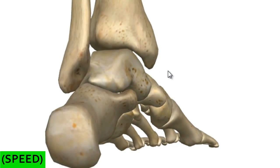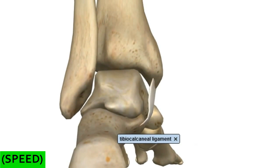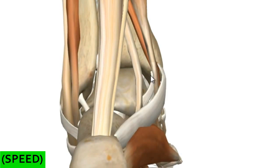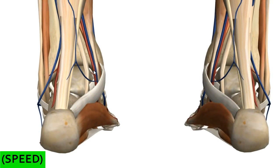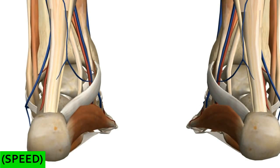Let's look at the structures that run through the tarsal tunnel. Starting medially, just behind the medial malleolus, we can see two tendons: the tendon of tibialis posterior, which lies deep, and the tendon of flexor digitorum longus on top of it, which is slightly more lateral. Just lateral to these tendons are the posterior tibial artery and posterior tibial vein. In this region you can palpate the posterior tibial pulse — just feel a little bit behind the medial malleolus.